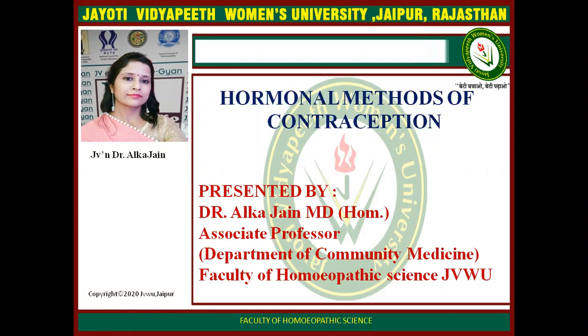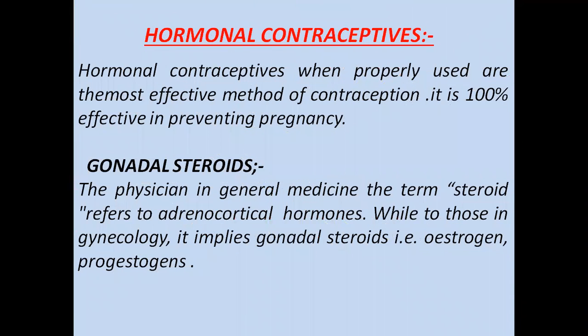In these sessions, I will discuss about hormonal contraceptive methods, or hormonal methods of contraception. Hormonal contraceptives, when they are properly used, they are 100% effective in preventing pregnancies. The main hormones used are either estrogens or progesterone.